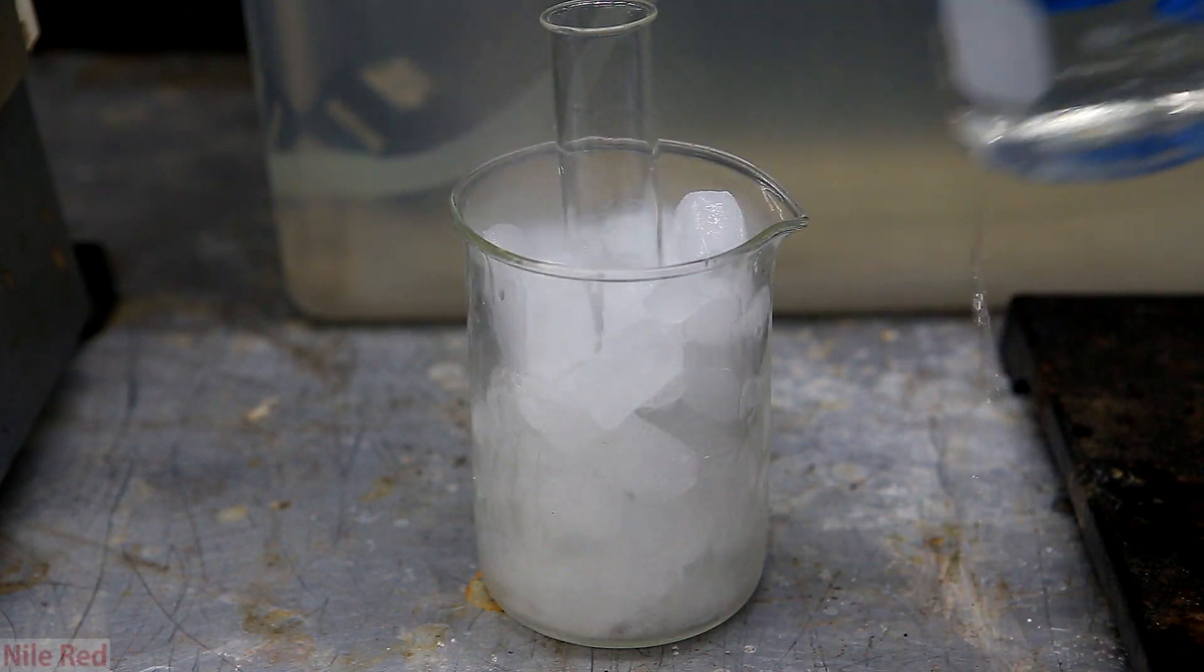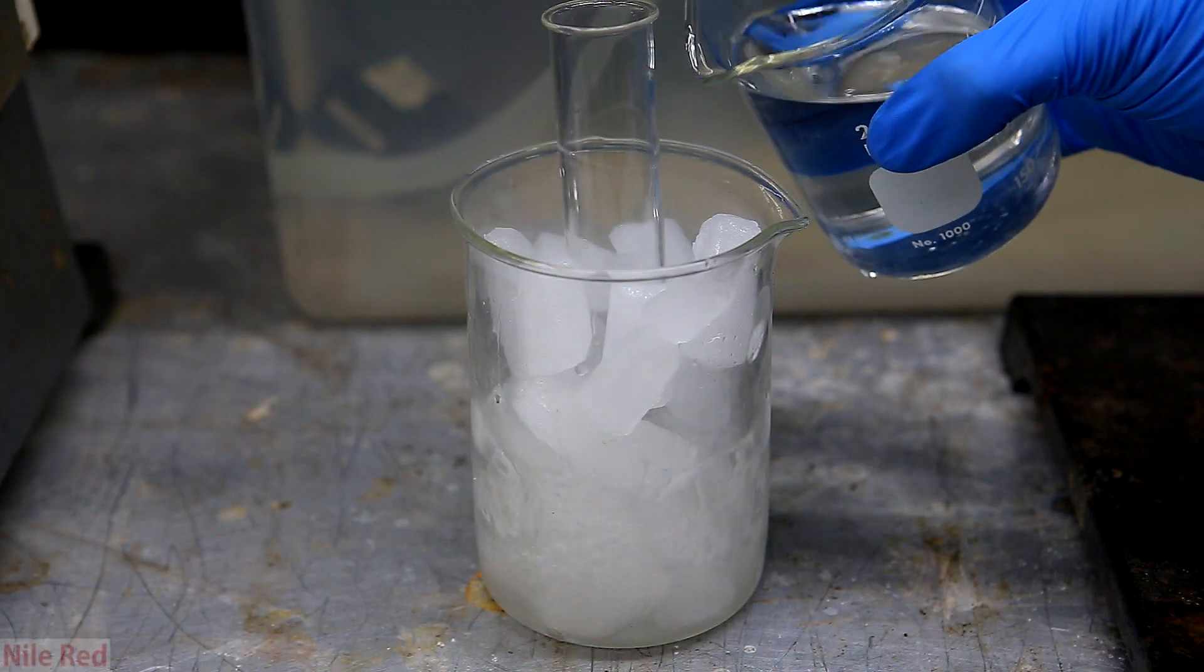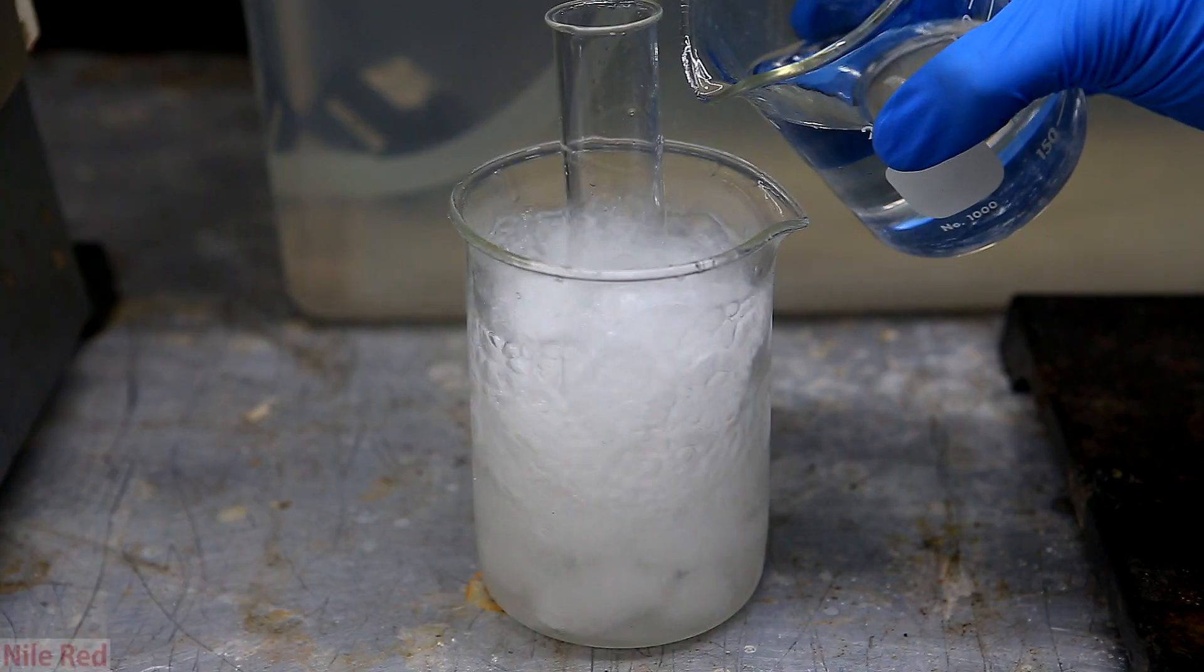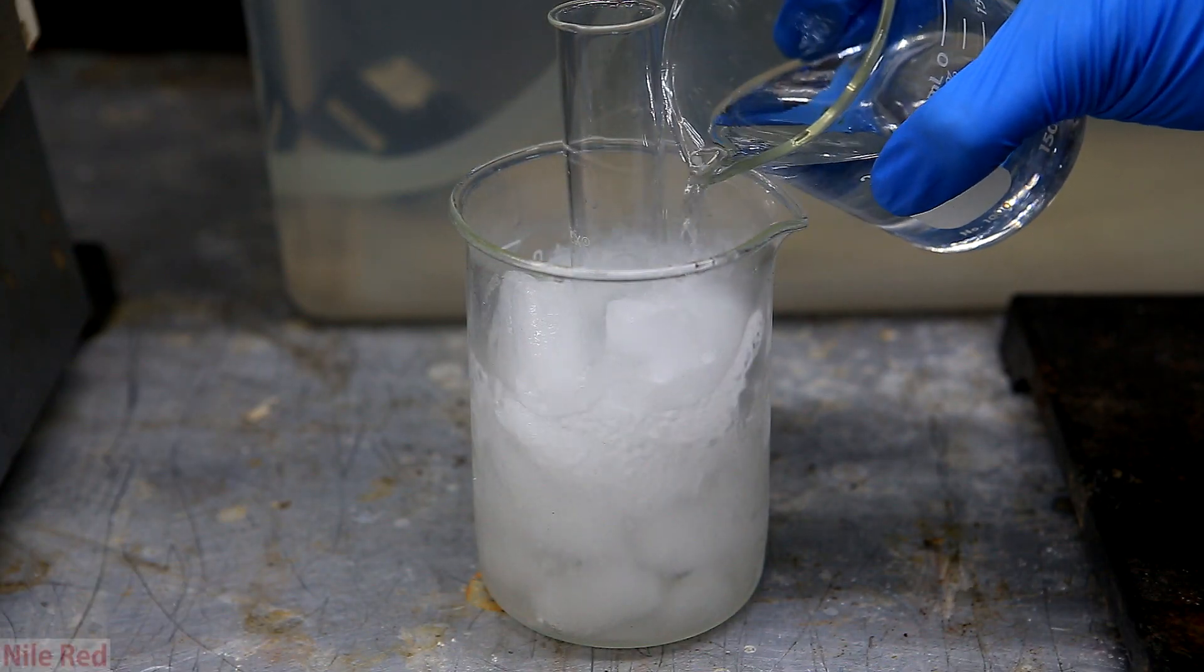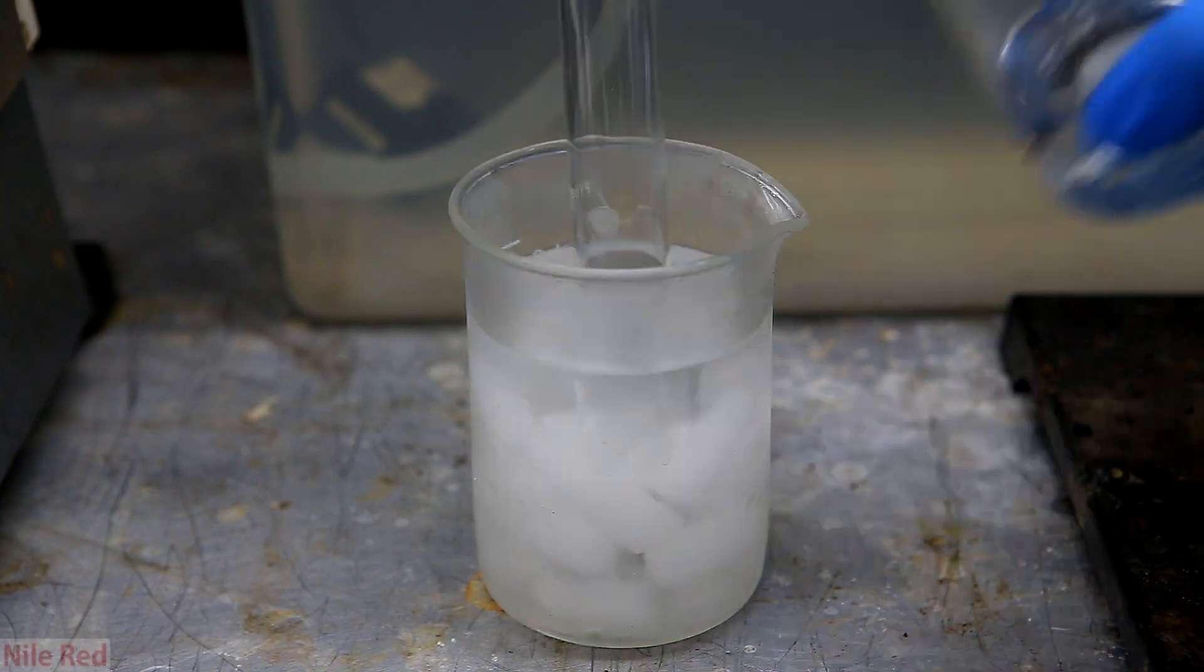The first thing we need to do is prepare something very cold to collect the ammonia in. To do this, I decide to submerge a test tube in a dry ice acetone bath. Dry ice has a temperature of about negative 78 degrees Celsius, and ammonia will start to condense at around negative 33.